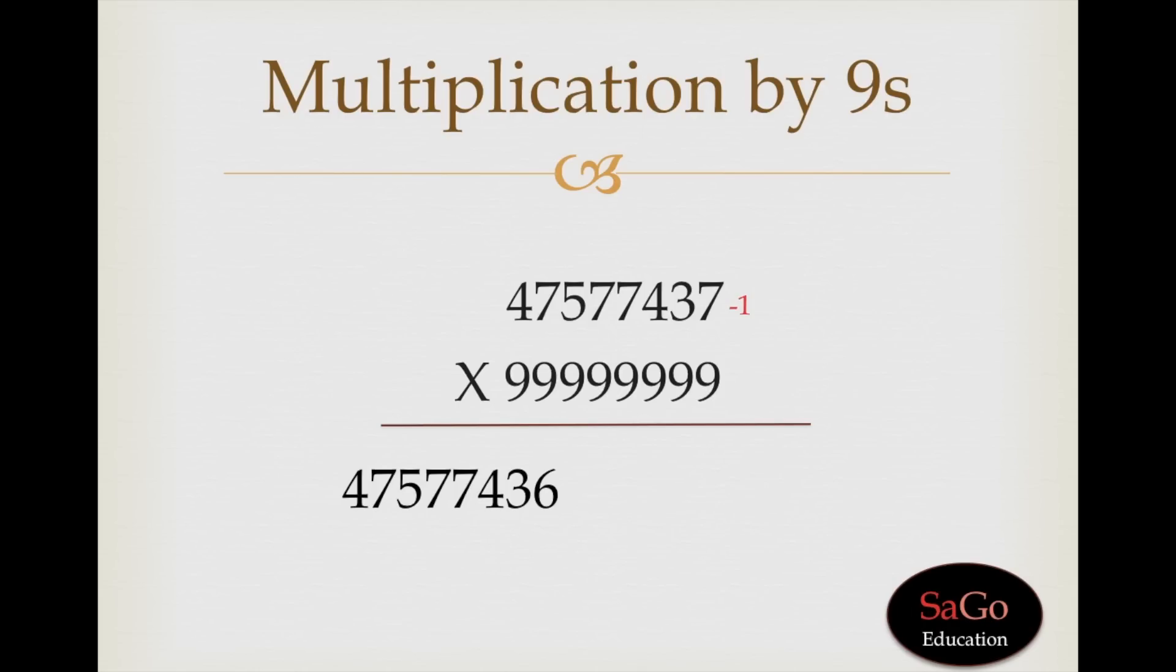Now, to get the full answer, all we need to do is, we will subtract each digit from 9 and last digit from 10. Remember, we are subtracting the upper digit all from 9 and last from 10. When we do this, we will get this digit. So, this is our full answer.